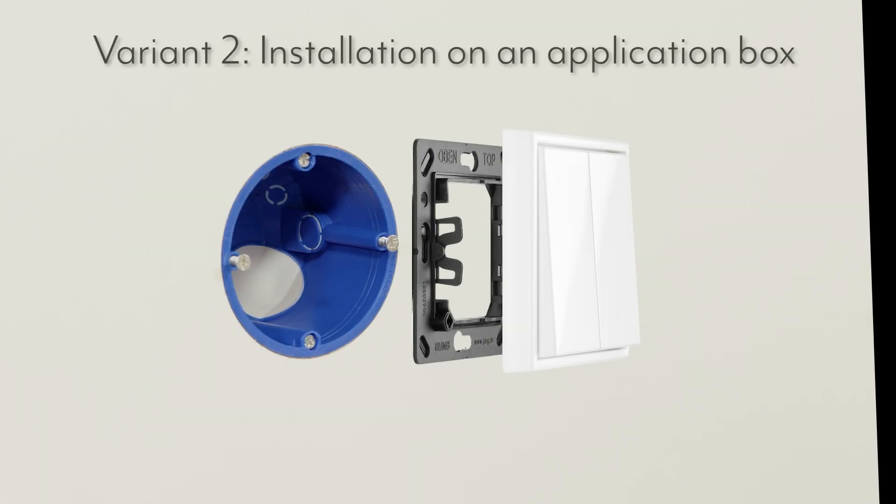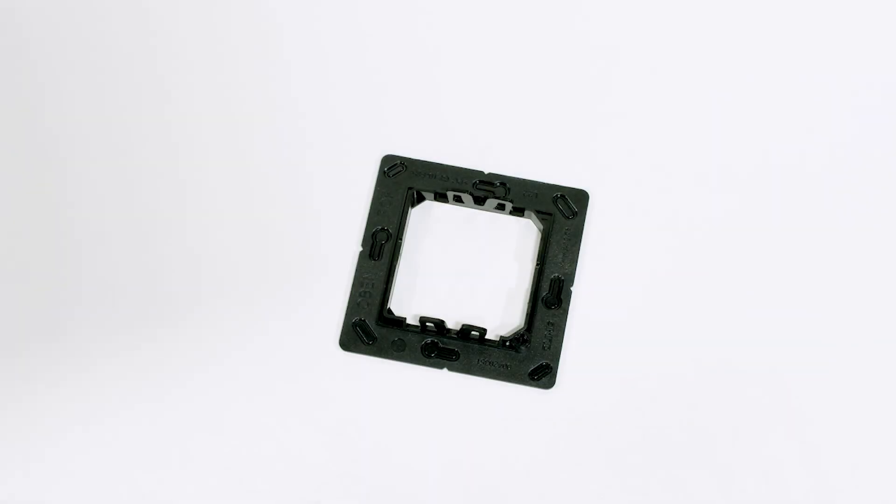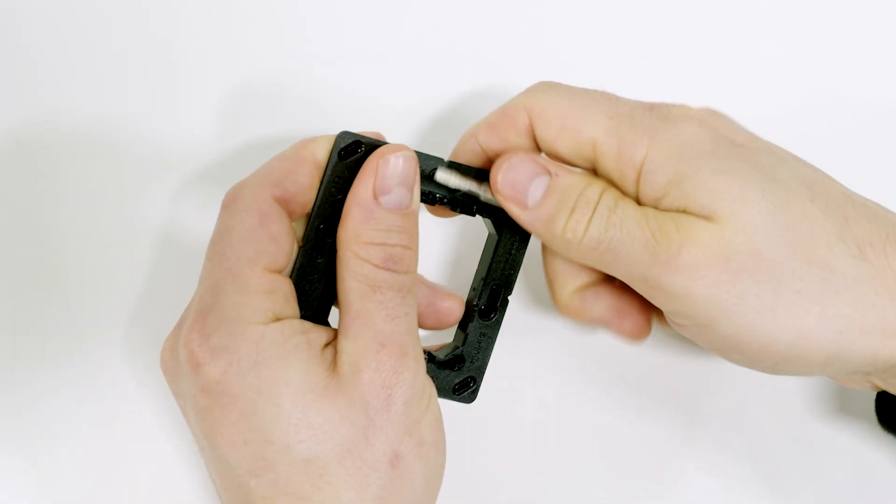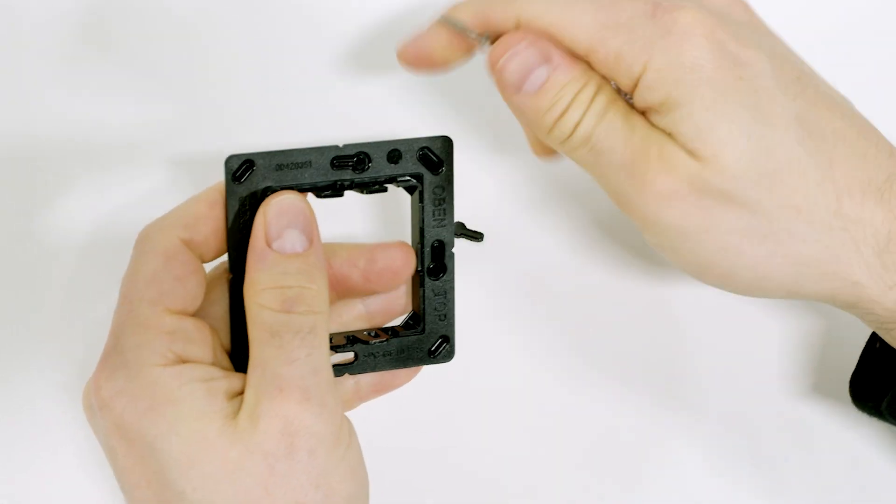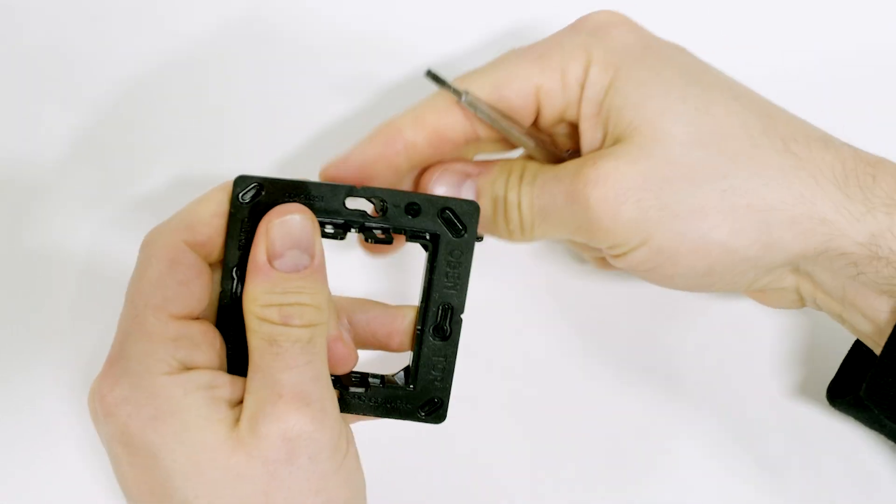To fasten the META push button on an application box proceed as follows. Break out the screw holes on the left and right side of the base plate using a screwdriver, for example.